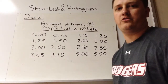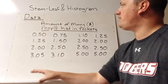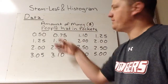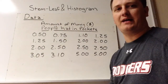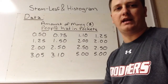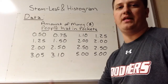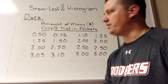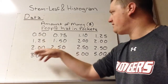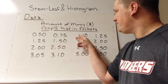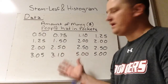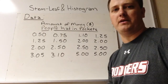To demonstrate both of these, we're going to use the same data each time. This is our data set — make sure you write that down. We're looking at the amount of money in dollars that people had in their pockets. One day in class, I had students take money out of their pockets and count it all up. There were 16 students. One person had 50 cents, another had 75 cents, $1.10, $1.25, $1.25, and so on.